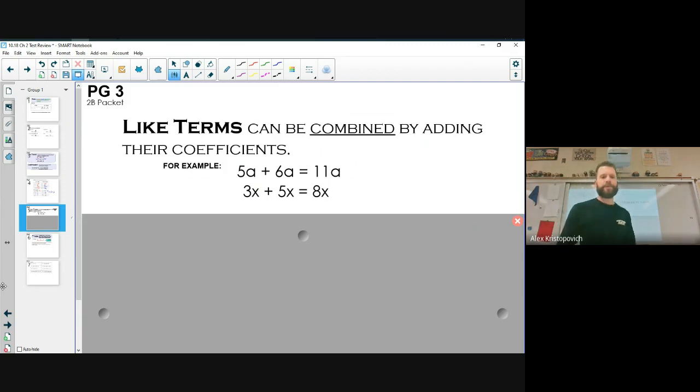So what can we do with like terms? So like terms can be combined by adding their coefficients together. Okay, so the whole thing we're looking for is when there are like terms. That's when we can combine them. So for instance, we have 5a plus 6a. Well, that's going to equal 11a. We saw that the a's were the same. So we said, I like to think of them as items. We have 5a's and we have 6a's. So how many a's do we have in total? Well, we have 11a's in total. So we add the 5 plus 6 and we get 11. And we keep the variable exactly the same. 3x plus 5x, well, that's going to equal 8x. Because again, they are like terms. It's basically how many x's do we have? And we have 8x's.